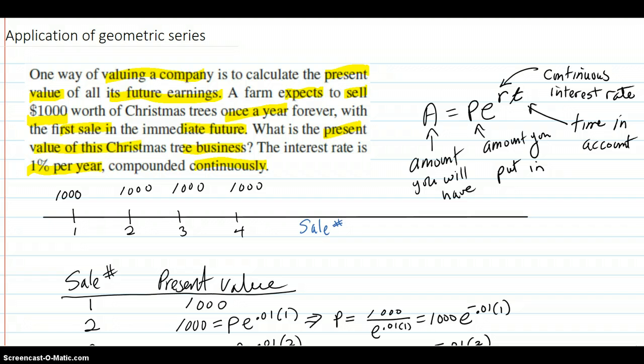The continuous compounding formula is right here. The amount you're going to have in the future if you put in an amount P now in the present and multiply it by this interest, which is continuous, it's e to the rt. R is the continuous interest rate and t is the time in the account. That's what you're going to have.